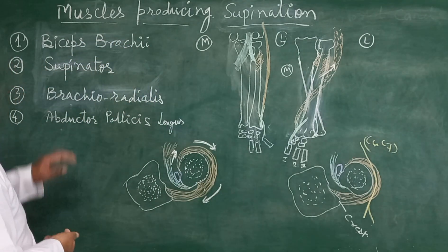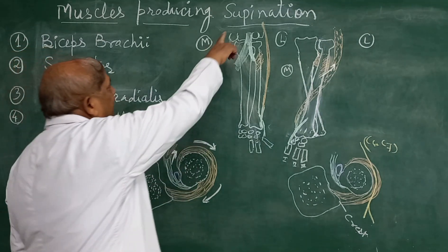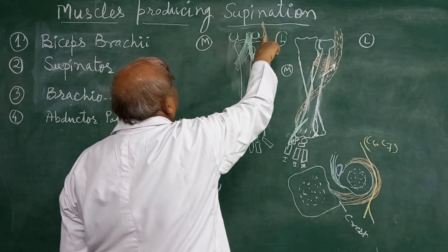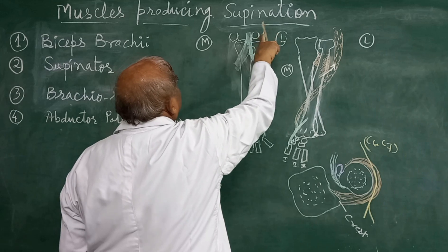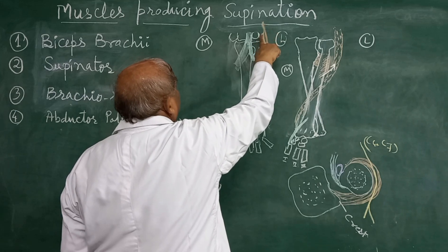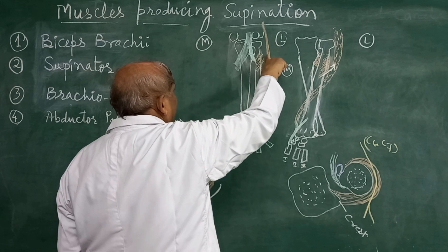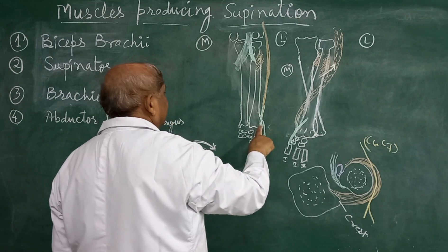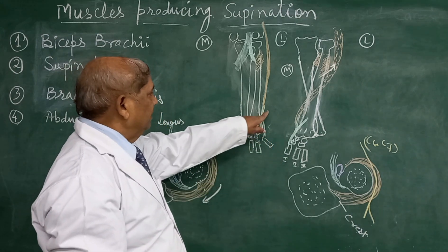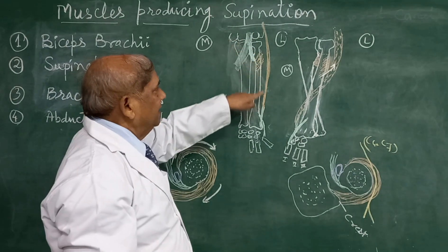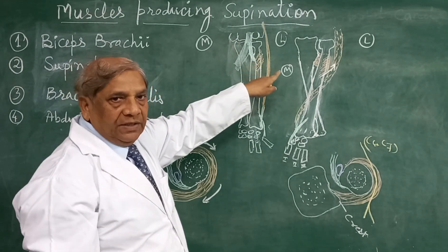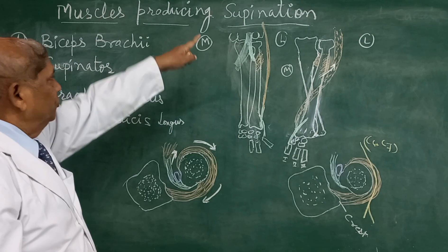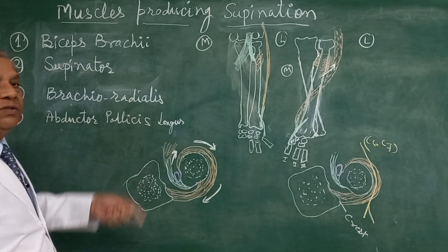This is the supinator muscle. The third muscle is the brachioradialis, which will help in supination. It takes origin from the lateral supracondylar ridge, just above the lateral epicondyle of the humerus, from where the muscle fiber will take origin. The long muscle will become tendinous and will attach just above the styloid process of the radius on the lateral surface. This is the brachioradialis muscle.